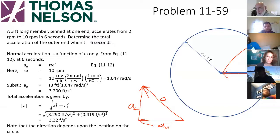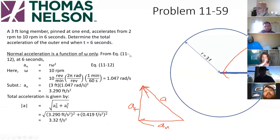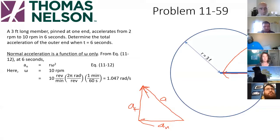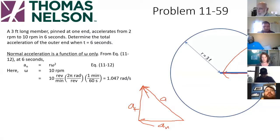The normal and tangential accelerations are independent. Normal is a function of velocity only; tangential is a function of rotational acceleration only. You do them separately and combine them to get the net acceleration. A student asked to review the formula: AT equals R times alpha. That's correct.